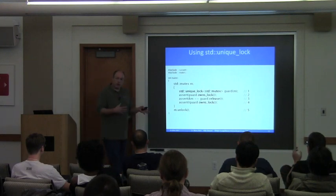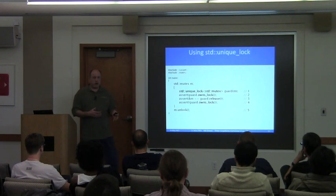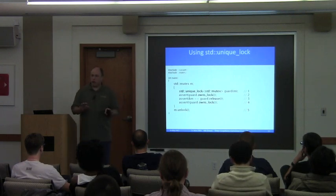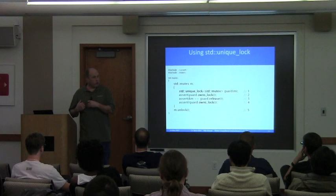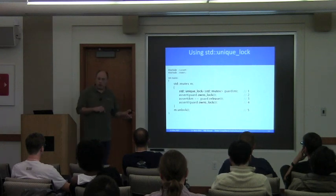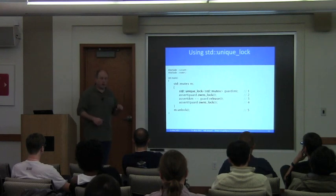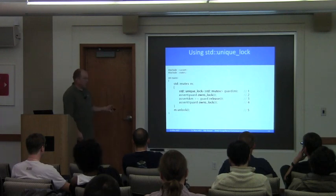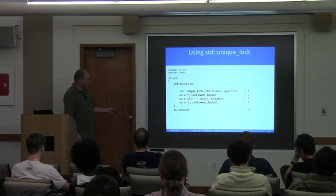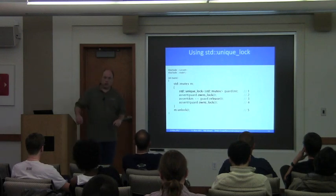You can call release() on unique_lock, which dissociates it from the mutex given to the constructor. It returns a pointer to that mutex so you can always recover it without necessarily having access to the original mutex variable. After releasing, obviously we don't own the lock anymore. Since I released it on line three, I need to unlock it manually on line five to make sure I don't destroy it while owning the lock.